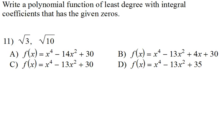When we have two answers, that means it should be degree 2, it should be a quadratic. Well, our answer choices are degree 4. Here's the deal: when you have square roots or when you have i's, they come in pairs.